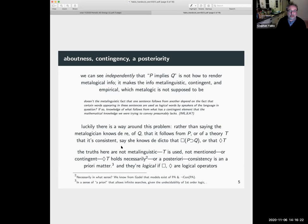So the truths here are not metalinguistic. T is used not mentioned in diamond T for the same reason as T is used and not mentioned in not T, or it's not the case that T. The truths here are not contingent, diamond T, that T is consistent, holds necessarily.